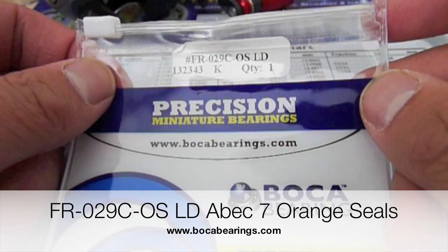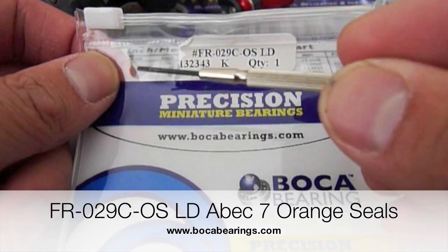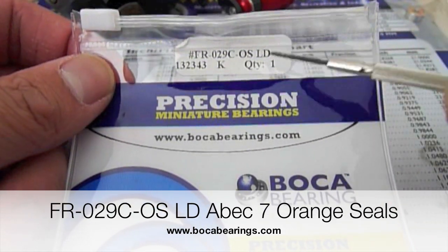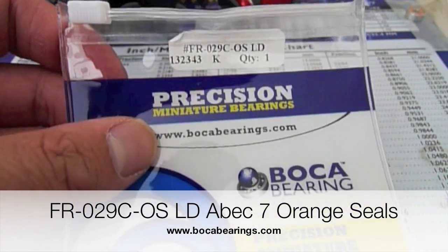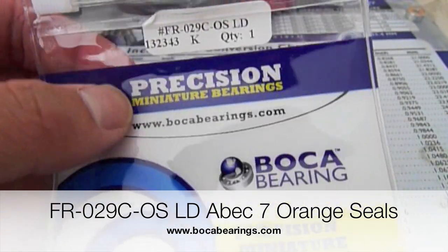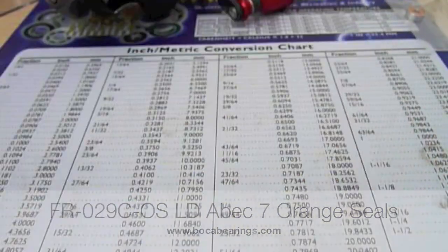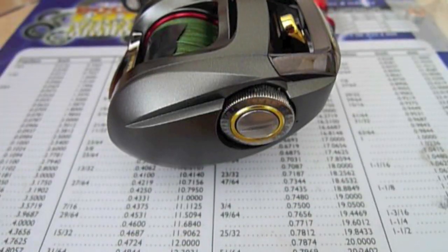This is the set of bearings that you're going to need from Boca. This is the model number right here. You can find it under a model search and select the Steez Spadecast reel. This is going to give you the option. So just look at this number and you'll get it.